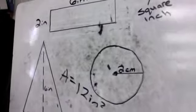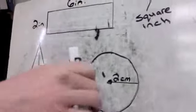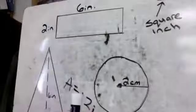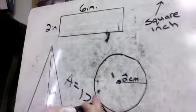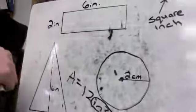That means that each one of these holds 12 of these. This is, this end part, square inches, this is a square inch.